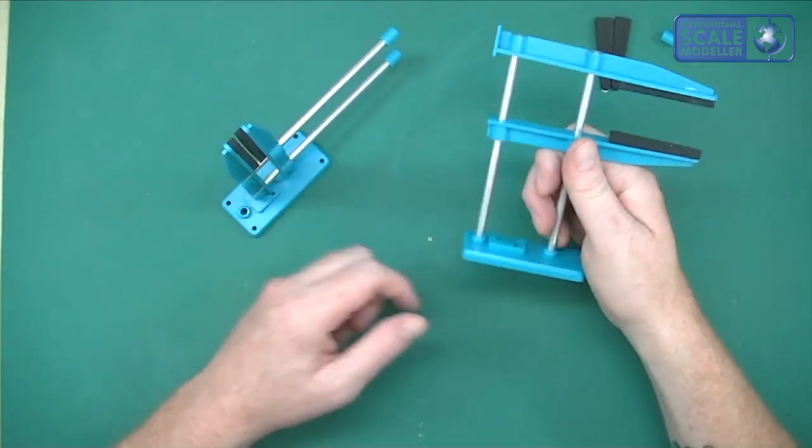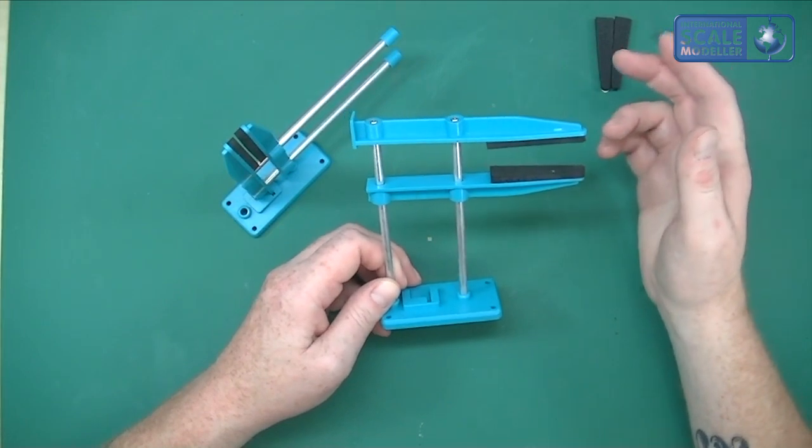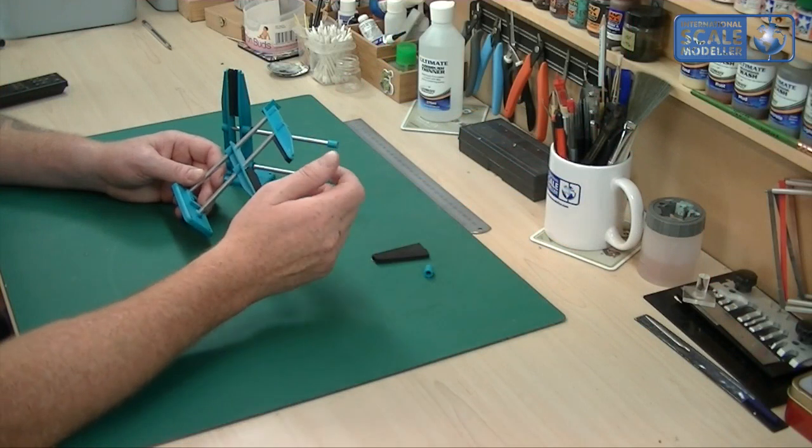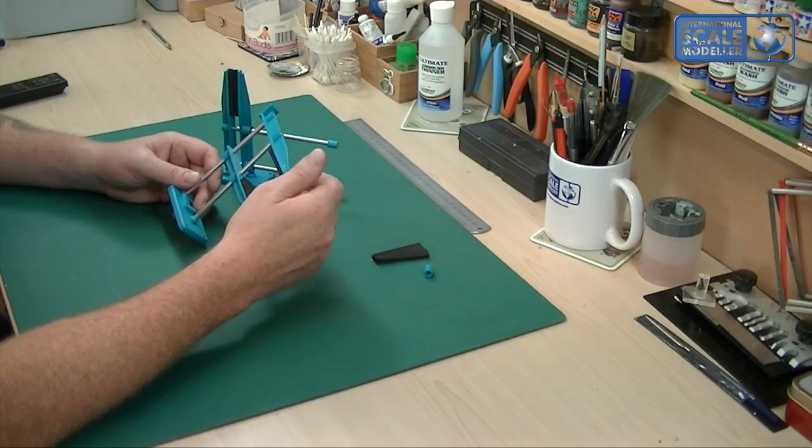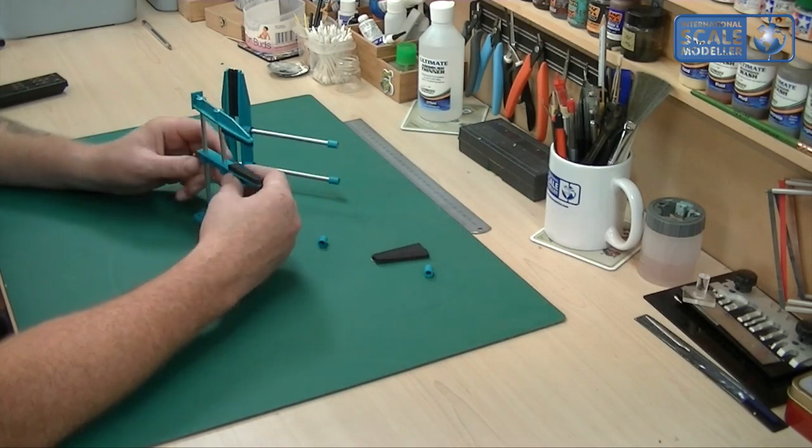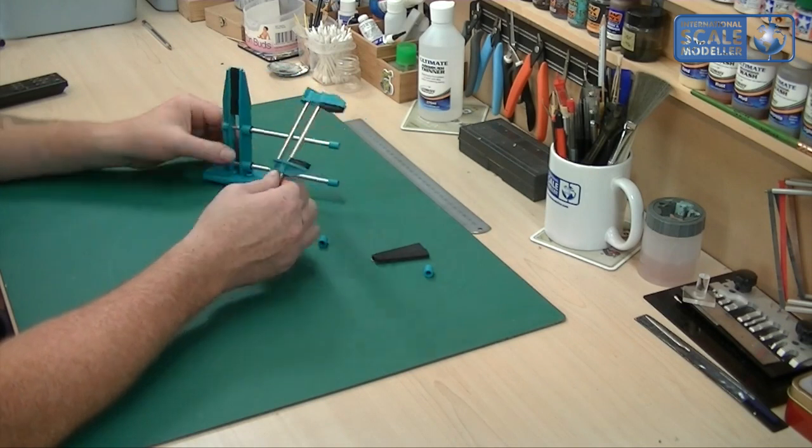And I think that for a fiver you have to get these if you're a modeler and you want to keep things together. They're ideal for fuselages, for ship hulls especially, and AFV. I would imagine putting the upper to the lower hull. I mean you don't need a lot of pressure on AFVs I've got to say, they kind of fit together quite easily.